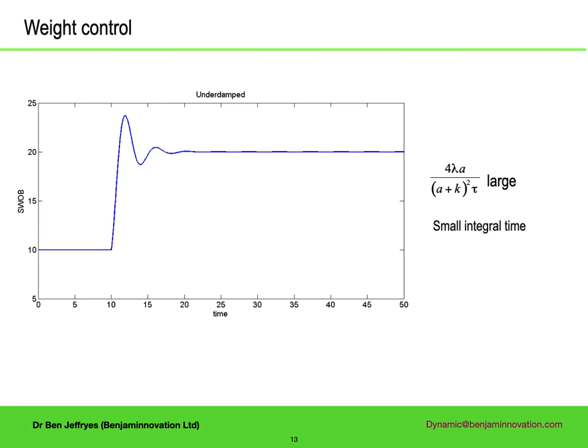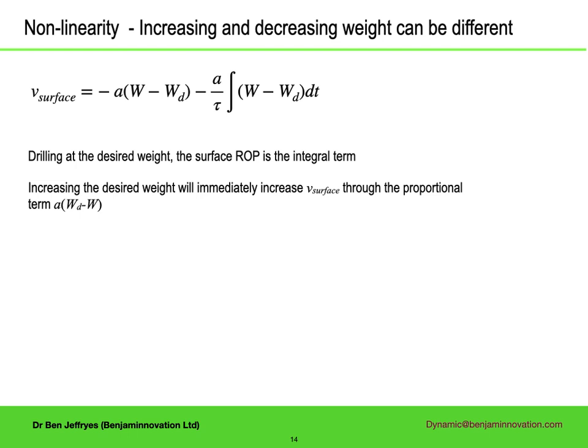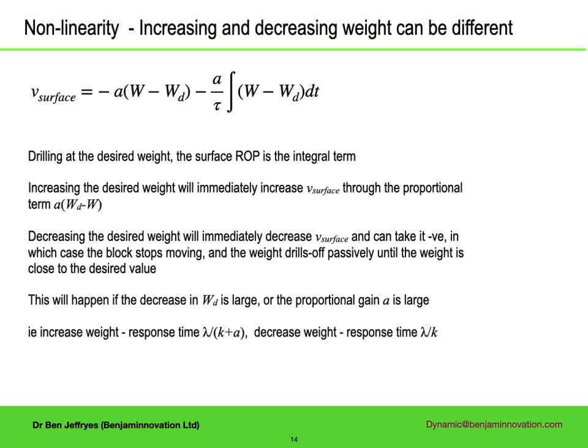Both these illustrations are for increasing weight, and there's a reason for that. In general, increasing and decreasing weight are different. When you are at equilibrium, the surface velocity — the surface ROP — is the integral term. If you increase the desired weight, the proportional term is immediately positive and so the surface velocity is increased. However, if the desired weight is reduced, the proportional term will decrease the desired surface velocity, and if the proportional term is sufficiently large, the desired surface velocity will go negative. But drilling with a normal rig, the surface velocity cannot go negative. To lower the block, the brake is used, but to raise the block, a motor has to be engaged. So if the desired velocity is negative, the actual velocity just stays at zero until the weight has drilled off passively. This happens if the weight decrease is sufficiently large, or if there is a large proportional gain a.